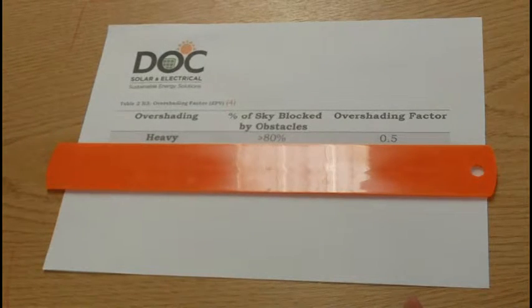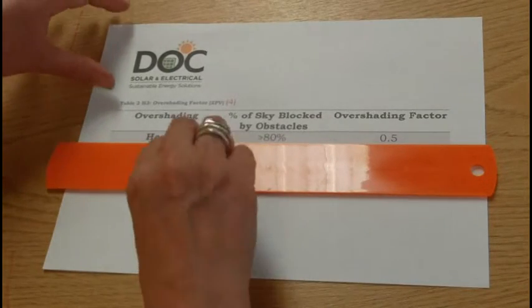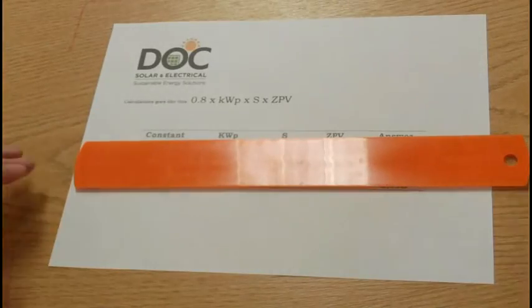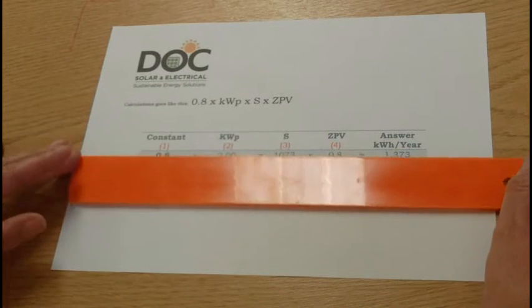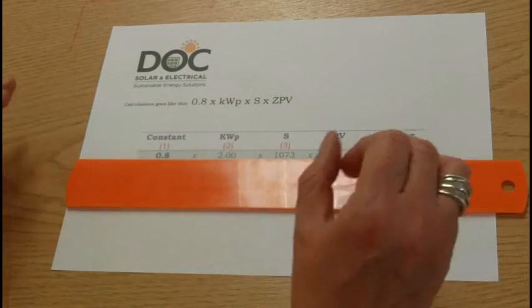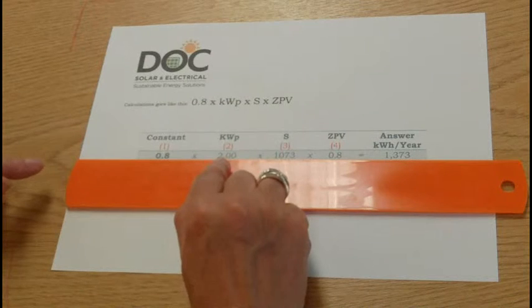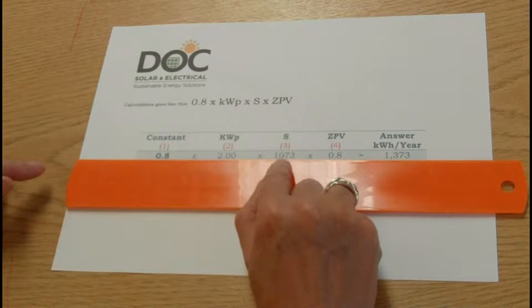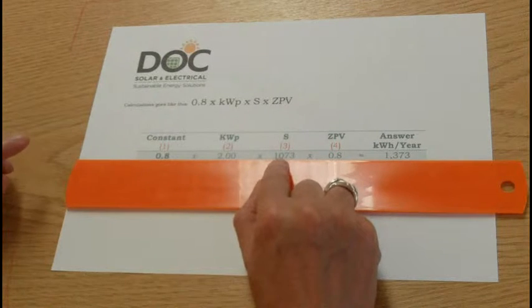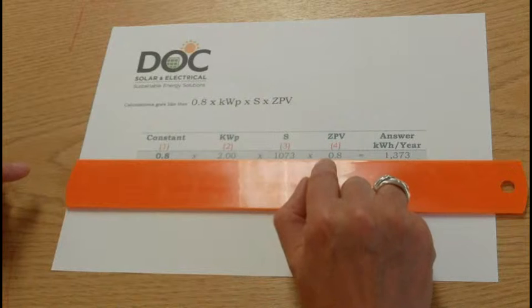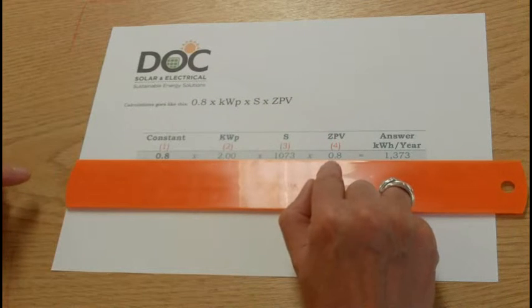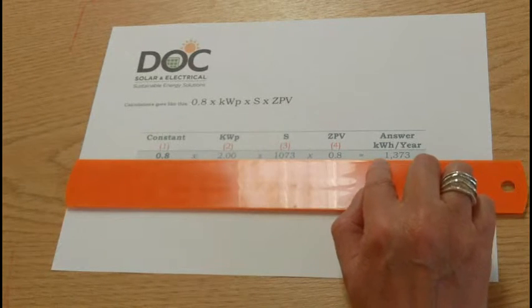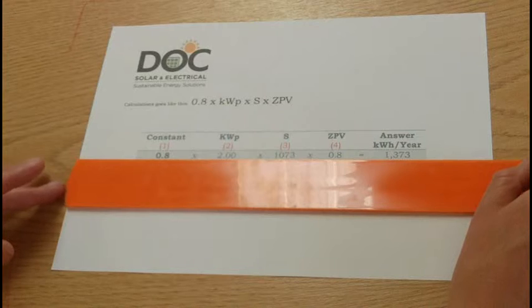Now that we know how the calculation is comprised, let's look at how that works in real life. So here's our calculation. We have our constant of 0.8. If we take the original system that we looked at, the 2 kilowatts peak, we take 0.8, and we times it by 2 kilowatts peak. Then we times that by the orientation, and in this case, I've put them on south. But I've given it some modest shading, so I've put a correction factor of 0.8 in. Multiply those four items together, and you'll get 1,373 kilowatt hours a year.